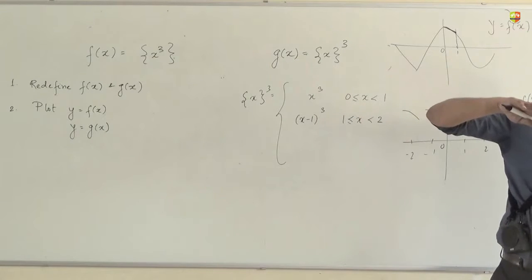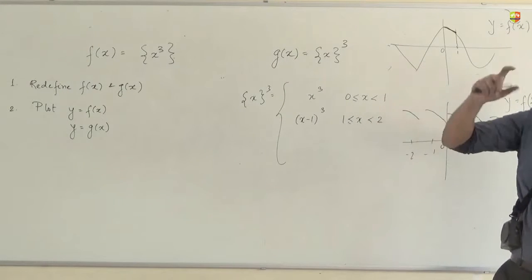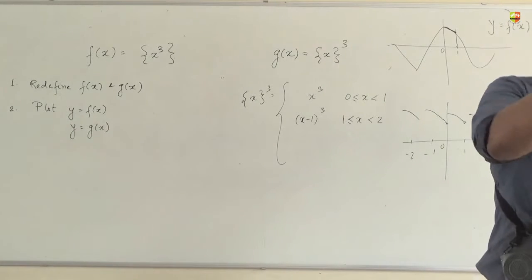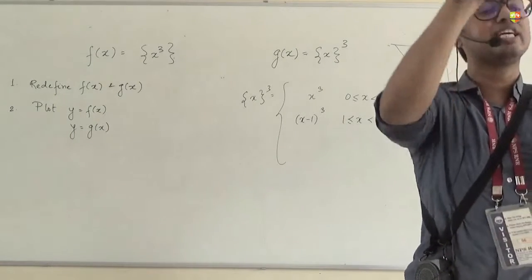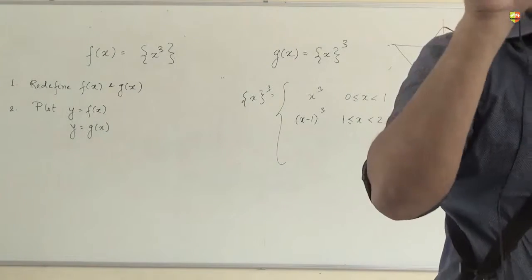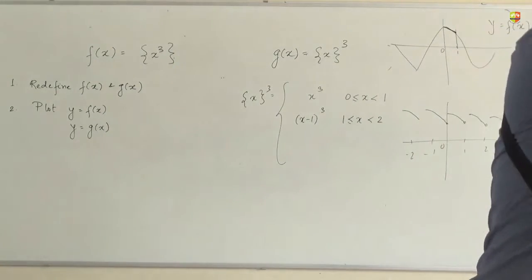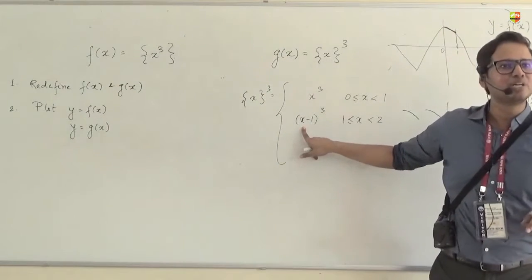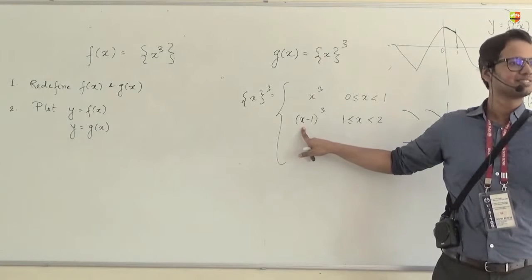When you have x lying between 1 and 2, what will happen to fractional part of x? Just go back to the definition of fractional part of x which I wrote in the beginning of the conversation. Between 1 and 2, the new fraction part becomes x minus 1 or not. So, won't it be x minus 1 whole cube? Clear?